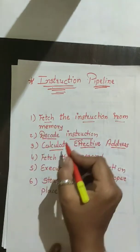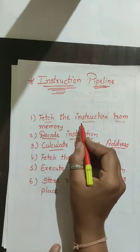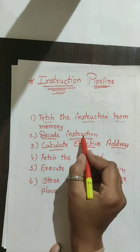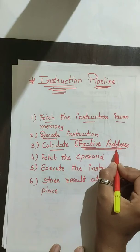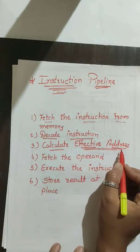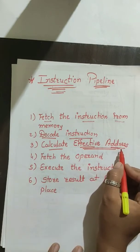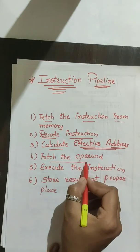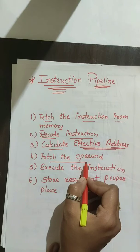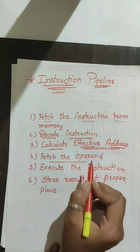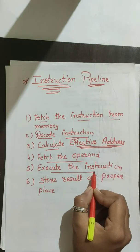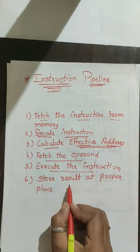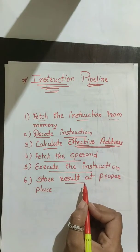This is essentially your instruction cycle: first fetch the instruction, then decode the instruction, then calculate the effective address. Calculating the effective address is not compulsory for all instructions — normally the effective address is already available in the instruction. But if we are using an indirect mode of addressing, then we need to find the effective address. Next, we fetch the operand — that is, bringing the operand from the memory. Then we execute the instruction.